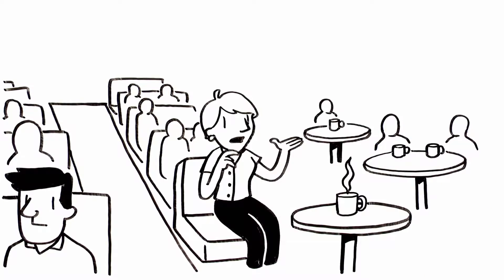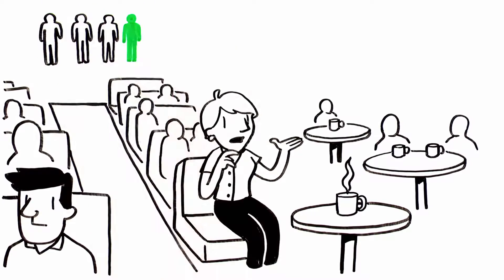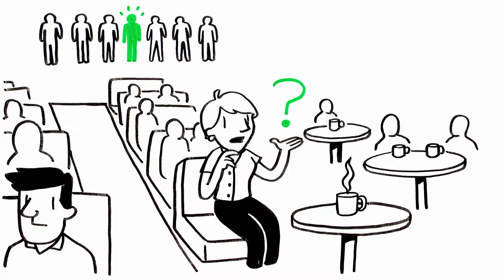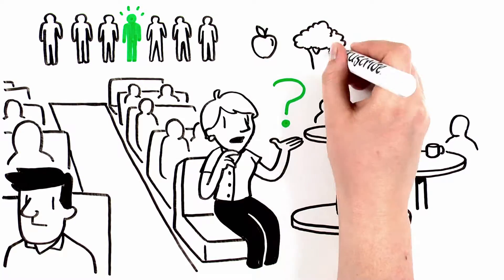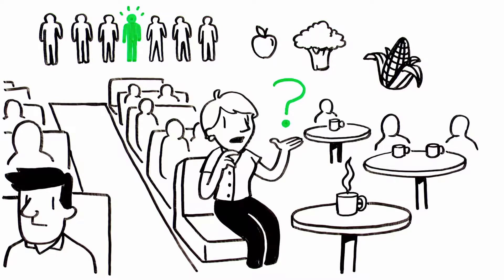Right now, one in seven Americans struggles with having consistent access to food. Yes, one in seven. So what can we possibly do to combat hunger and access to nutrition on that kind of scale?